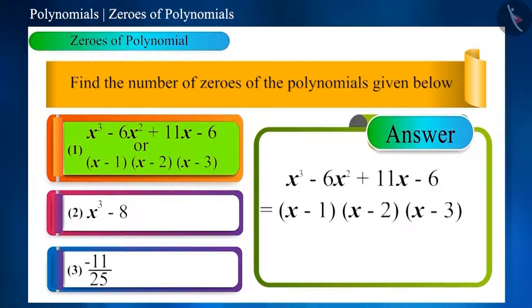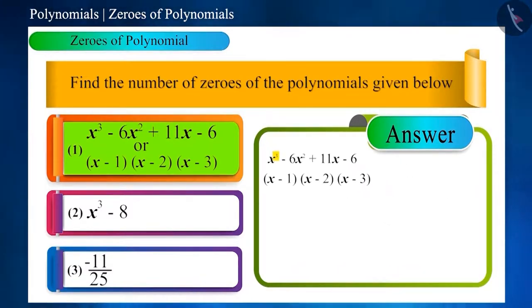We determine the number of zeros by the highest power of the variable. For example, the highest power of variable of this polynomial is 3. So, this can have a minimum of 1, a maximum of 3 zeros.